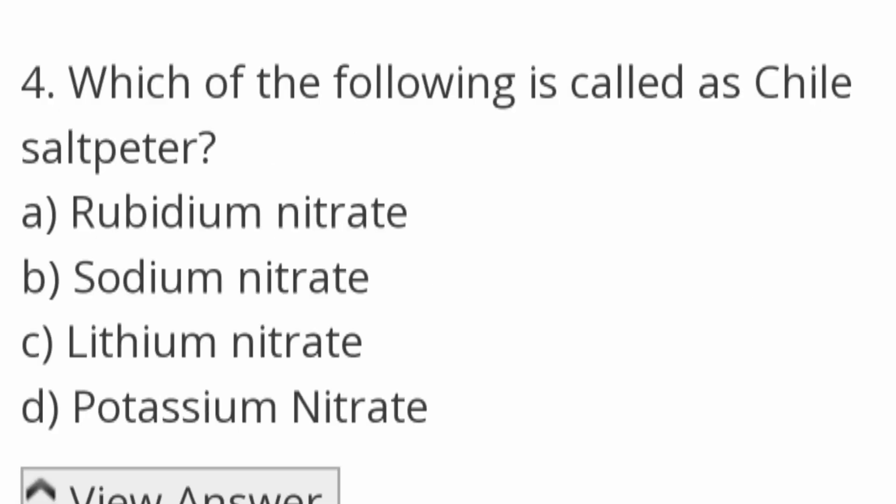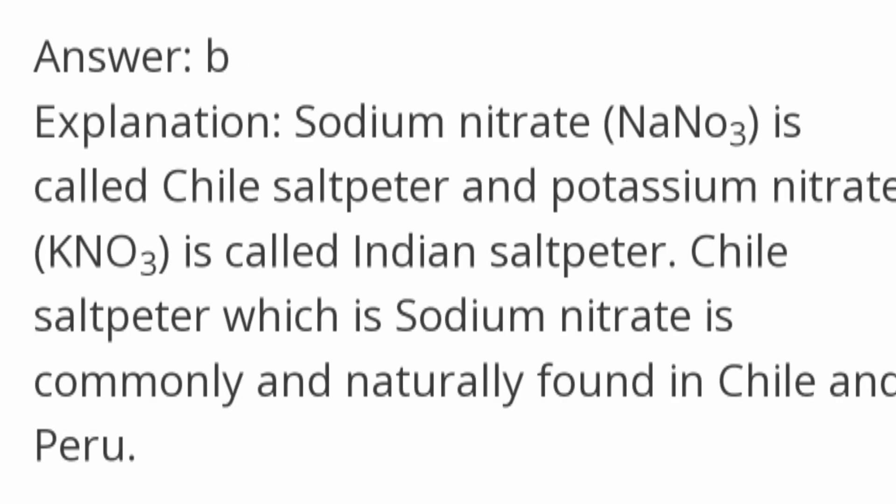Which of the following is called chilli saltpeter? Options: rubidium nitrate, sodium nitrate, lithium nitrate, potassium nitrate. The answer is sodium nitrate. Potassium nitrate is known as Indian saltpeter.